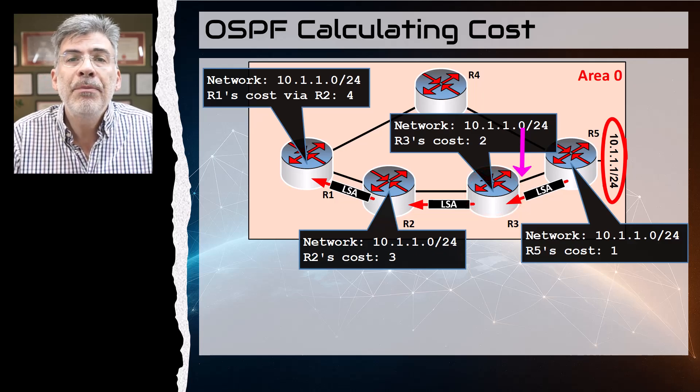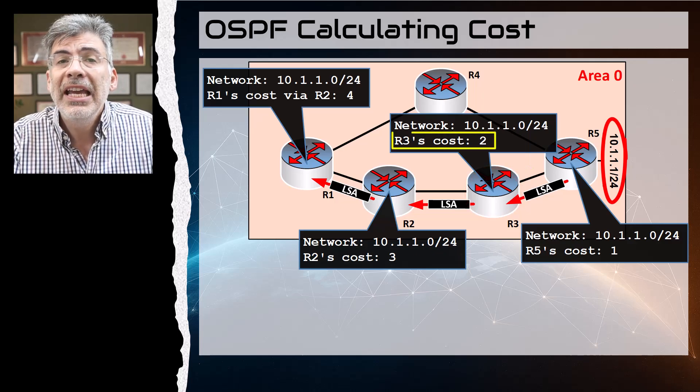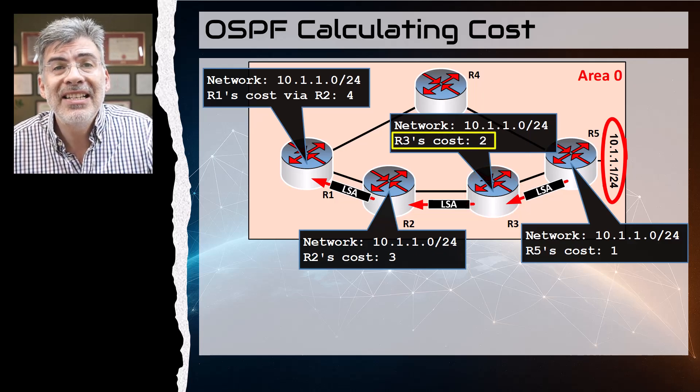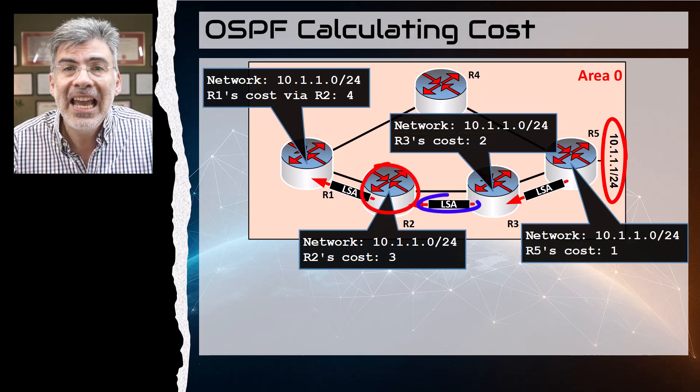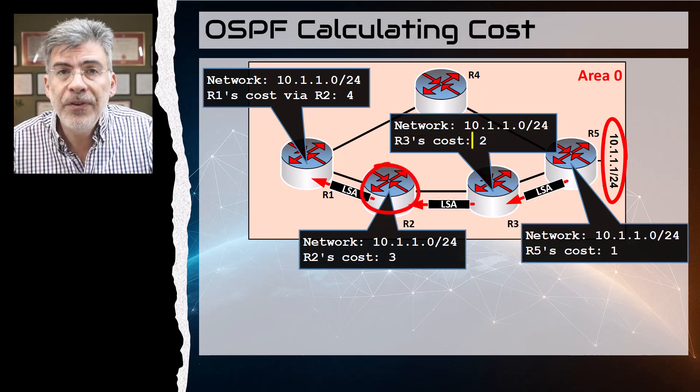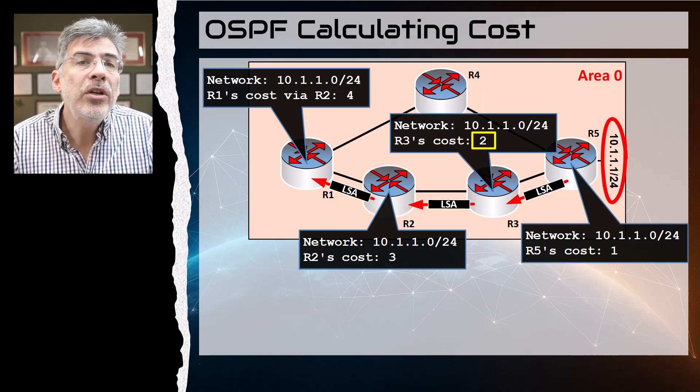When R3 receives it, it adds its own cost of this destination network-facing interface, which is one, and puts the accumulated cost of two in its own LSDB. When R3 advertises that network to R2 with an LSA, it places a cost of two for the network.